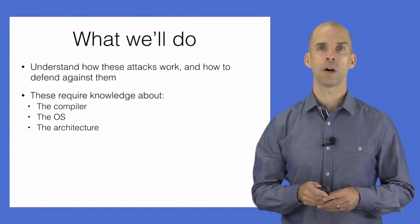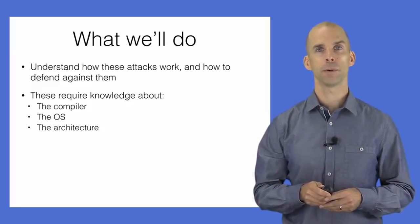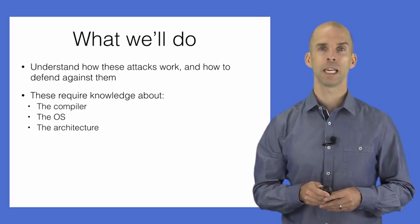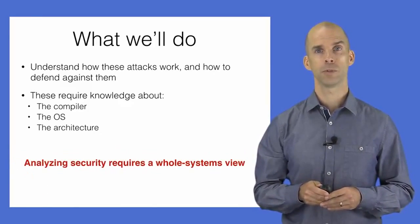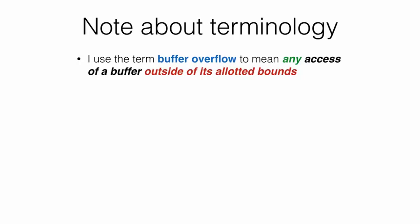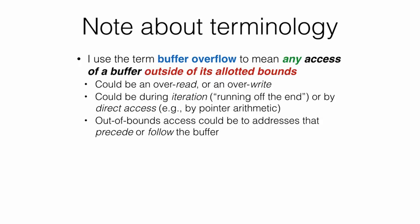Knowing the details of memory layout, an attacker can exploit bugs in how a program utilizes memory. Security often requires a whole-system view, and our study here is an example of that. The term 'buffer overflow' is used broadly to mean any access of a buffer outside its allotted bounds — this could be an overread or overwrite, occurring during iteration across buffer elements or by direct index. The out-of-bounds access could be to addresses that either precede or follow the buffer.